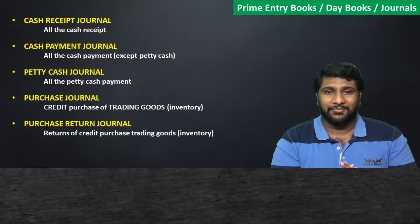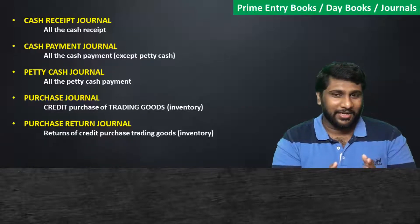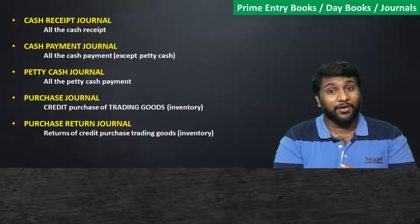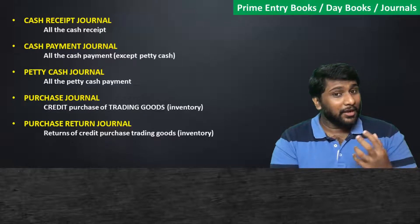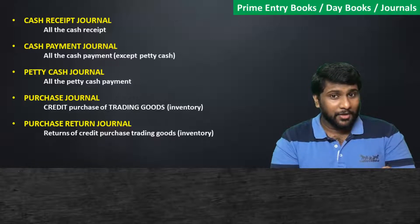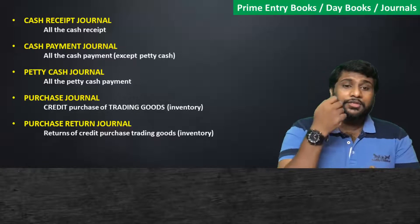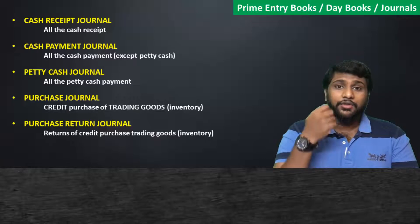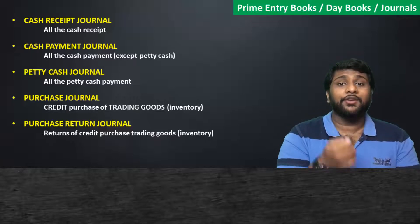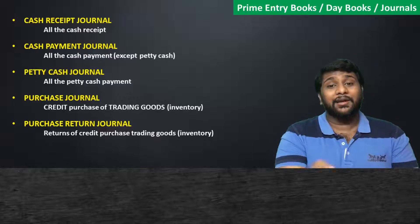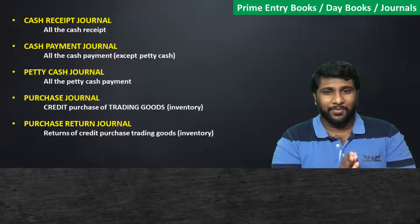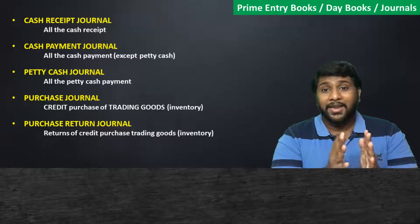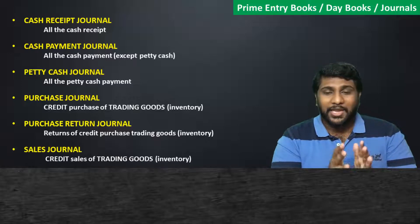The next prime entry book is the purchase return journal. In the purchase return journal, whatever trading goods you purchased on credit — if you return those goods back to your supplier, those transactions should be recorded in the purchase return journal.